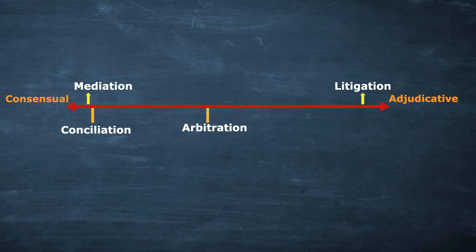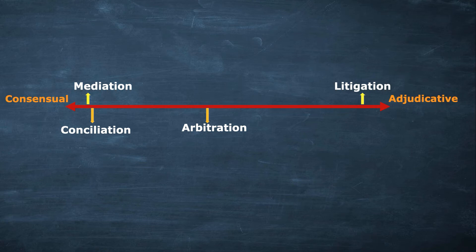The last term is conciliation. Conciliation is a little to the right in comparison to mediation — it is consensual, of course, but since the conciliator has a slightly more active role than the mediator, it sits a little further right. Otherwise, both are similar. So on this first continuum — adjudicative on one side and consensual on the other — you can see where all four terms fall.